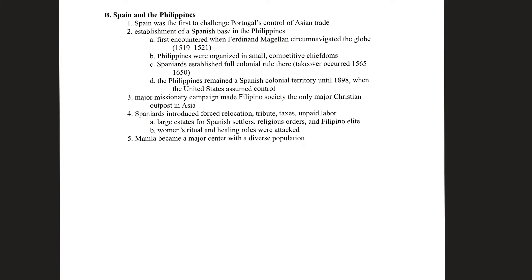As Portugal faded, Spain began to challenge Portugal's control of Asian trade. Spain was the first to do so, establishing a base in the Philippines. The Philippines were organized into small competitive chiefdoms, making divide-and-conquer tactics very effective — similar to what the Spanish did in the Americas. No other European countries were particularly interested in the Philippines, as it lacked the fantastic natural resources that attracted rivals.